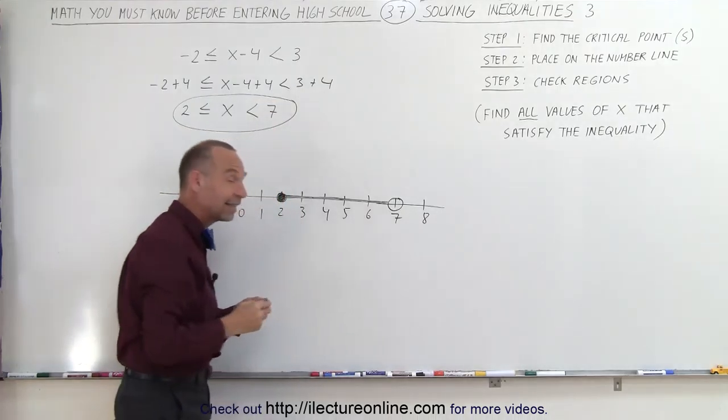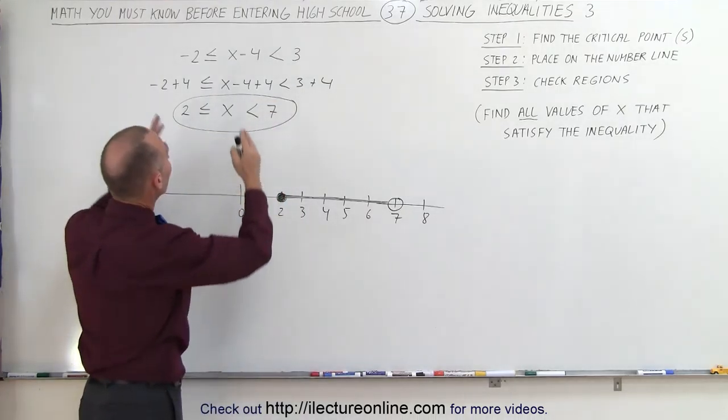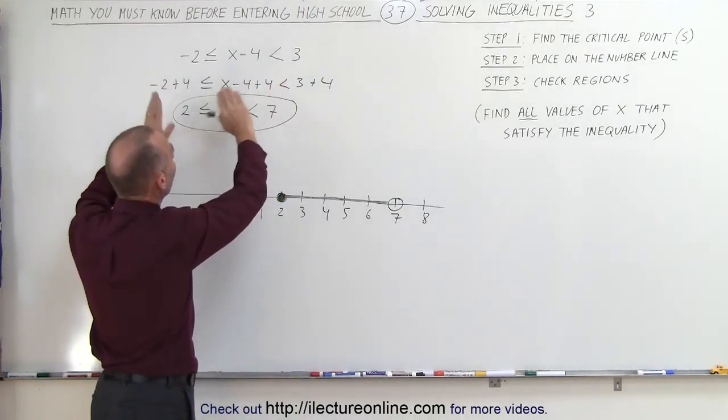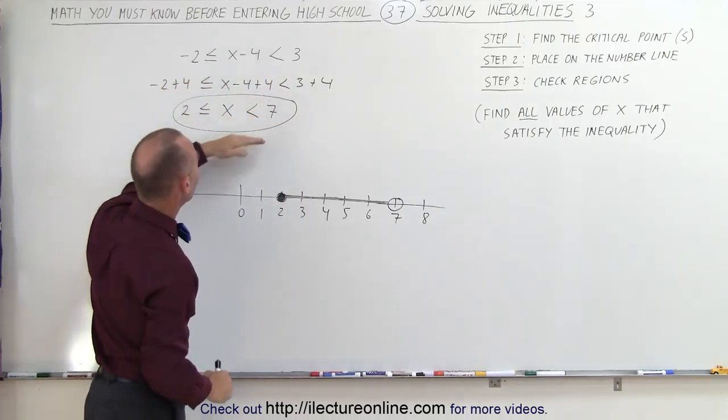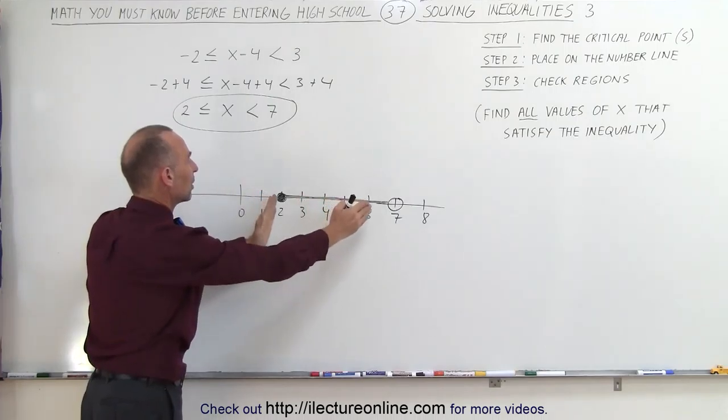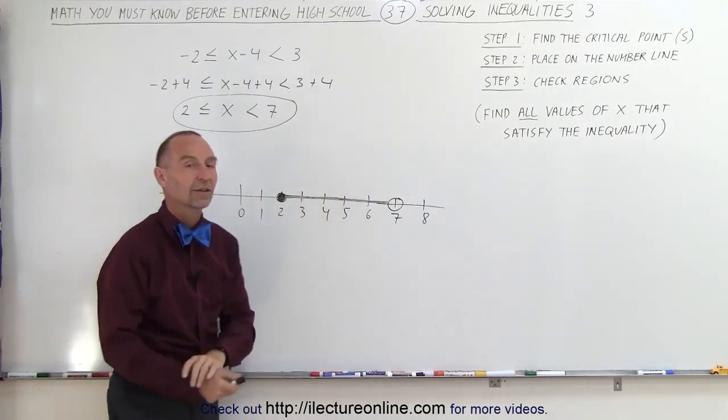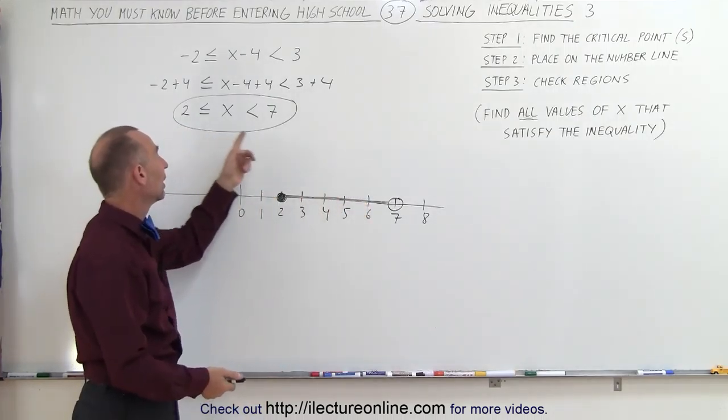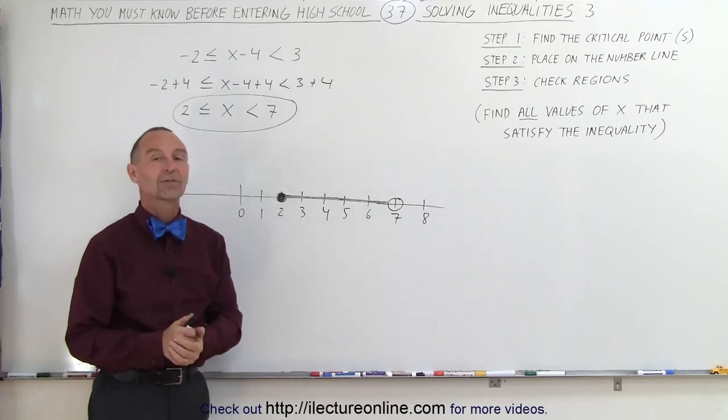So we can find the answer very quickly by simply simplifying what we have up here, adding 4 to every portion of the inequality, isolating x between the two inequality symbols, and then we realize that that's the answer, the values between 2 and 7, and that's how it's done.